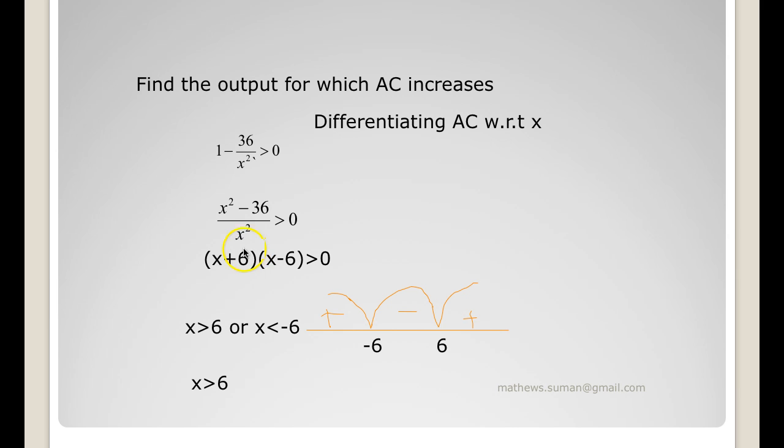Taking the LCM you get (x squared minus 36)/x squared greater than 0. Your denominator is anyway greater than 0, so I have (x + 6)(x - 6) is greater than 0, that is x squared minus 36. So we divide the real line into intervals, take 6 and minus 6, and mark alternate plus and minus starting from the rightmost interval as explained in quadratic inequalities. So it is greater than 0 when x greater than 6 or x less than minus 6, but x is the output so x cannot be less than minus 6, so x is greater than 6.